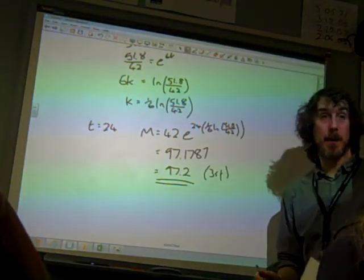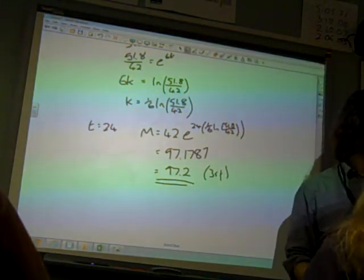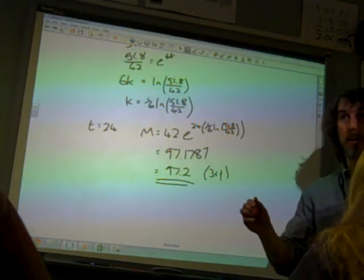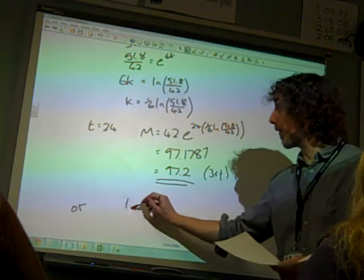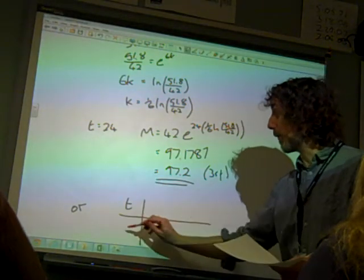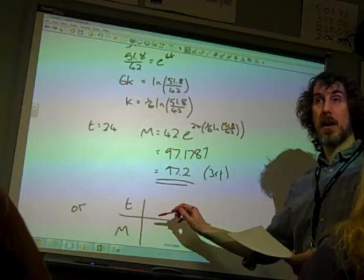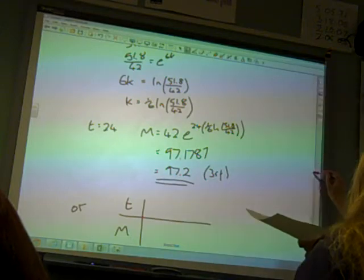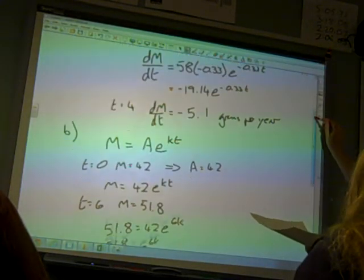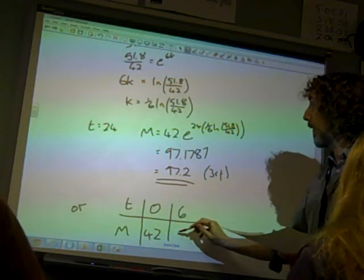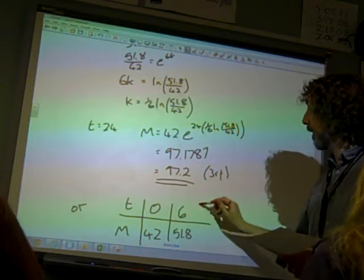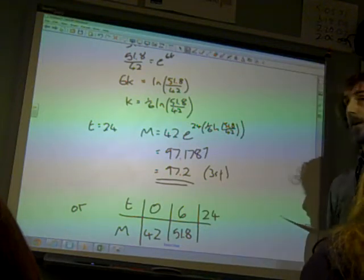I did say there were two ways that we could have done this. Do you remember doing these with little tables of values as well? So the alternative method here is to say that what we've got is a little table with our time and our mass in them. We've got that when t is 0, m is 42. We've got when t is 6, m is 51.8. And we're at 24.